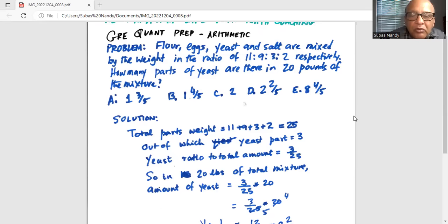So in 20 pounds of the total mixture, amount of yeast will be 3 parts out of 25 parts multiplied by 20.